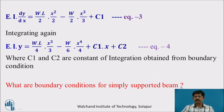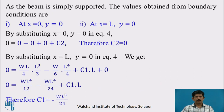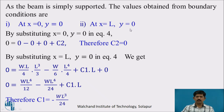The boundary conditions for a simply supported beam are: at x = 0, y = 0, and at x = L, y = 0, meaning deflection is zero at both ends. Substituting x = 0 and y = 0 in Equation 4 gives C2 = 0.